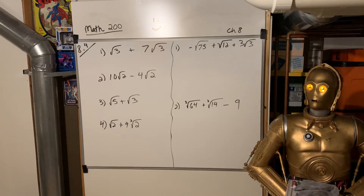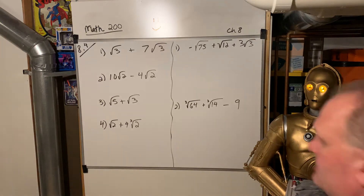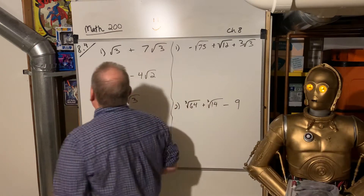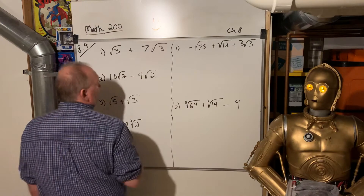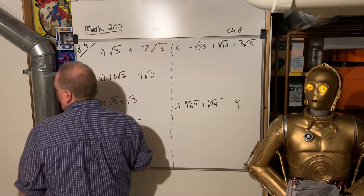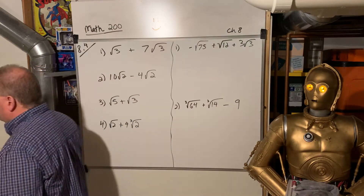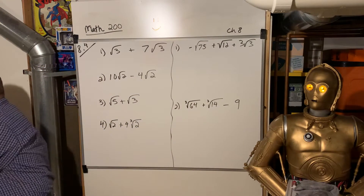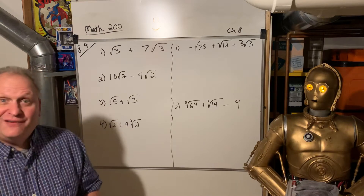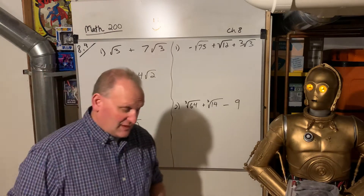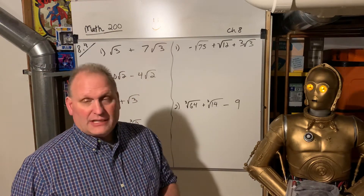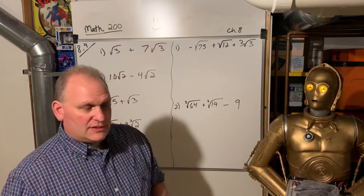All right, we are back. This is Math 200. We're looking at chapter 8 from the Newton notes packet, and we're looking at 8.4: adding, subtracting, multiplying radical expressions. So remember, radicals have square roots on them.